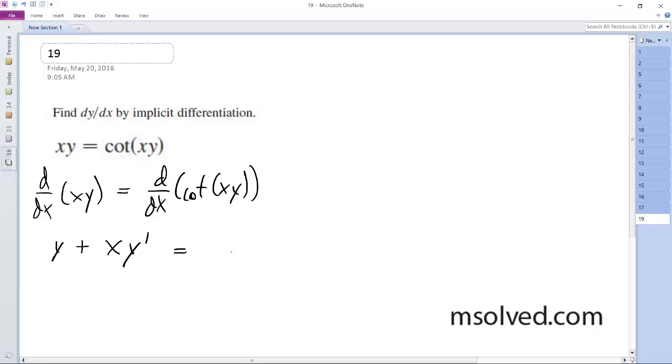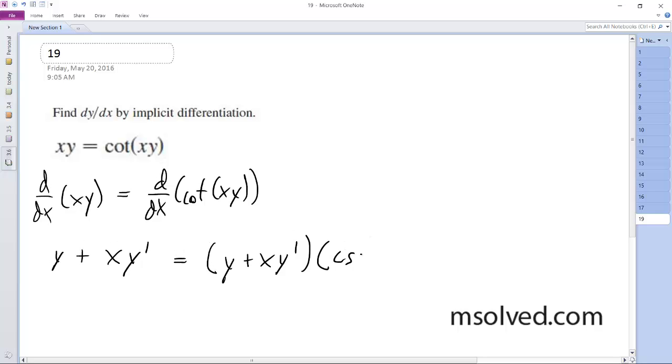And then is equal to, so derivative on the inside, we use the product rule again, we get y plus xy prime, and then derivative of the cotangent here in this case is going to be cosecant squared xy.